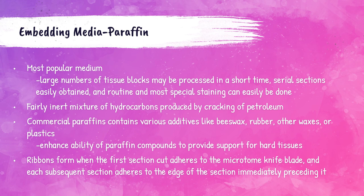The most popular embedding medium is paraffin wax. Large numbers of tissue blocks may be processed in a short time and it allows for routine and special staining. Paraffin wax is fairly inert and can be bought commercially; commercially purchased paraffin waxes contain additives like beeswax, rubber, plastics, and other waxes. Beeswax reduces crystal size and increases stickiness; rubber reduces brittleness and helps ribbon formation; plastics increase support and hardness; and other waxes produce a smoother texture and smaller crystal size.